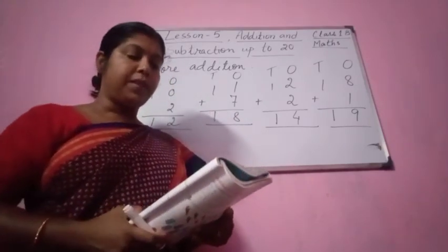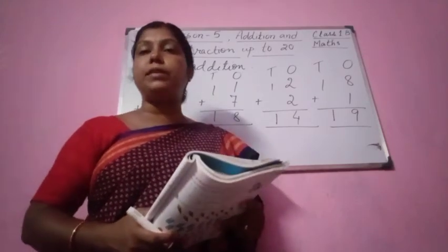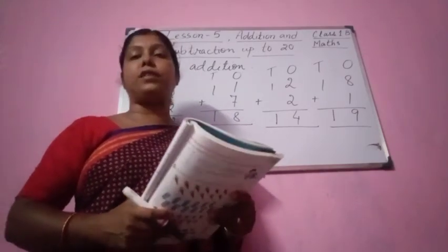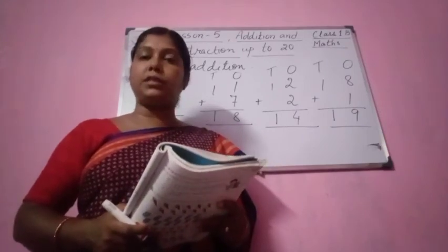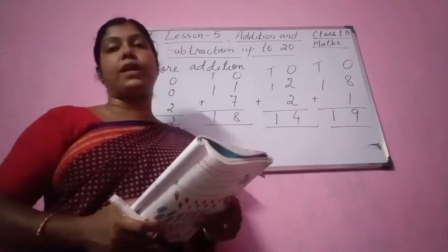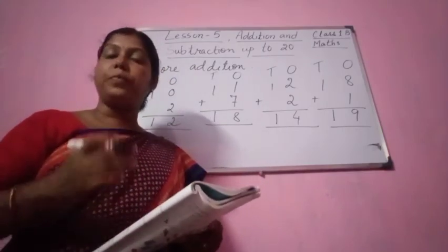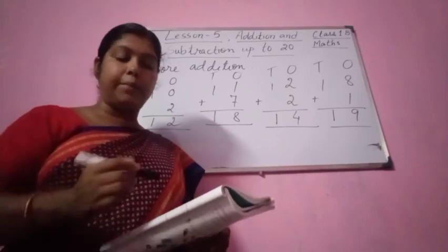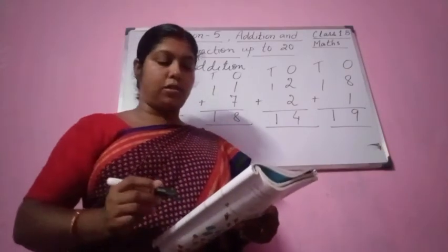Next one: Rajesh has 16 marbles. Rohit has 3 marbles. How many marbles all together? All together means all — together how many they have? They have 16 plus 3 equal to 19 marbles.